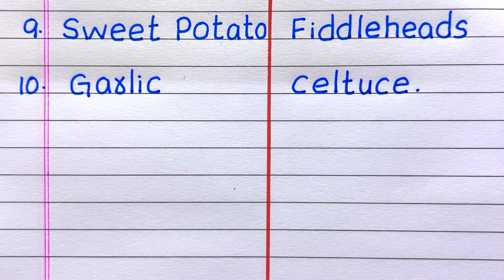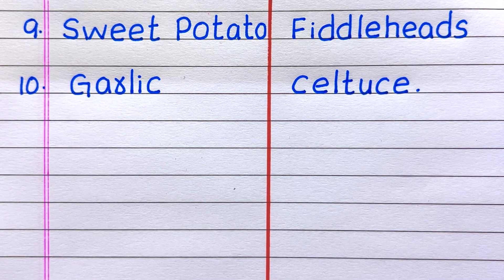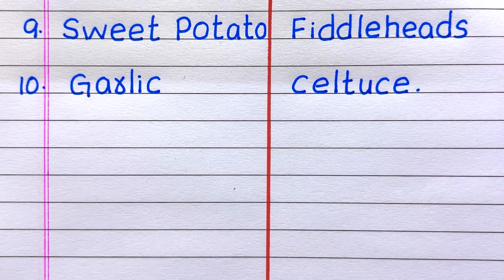Ninth root vegetable is sweet potato, tenth is garlic. Ninth example of a stem vegetable is fiddleheads, and the tenth one is celtuce.